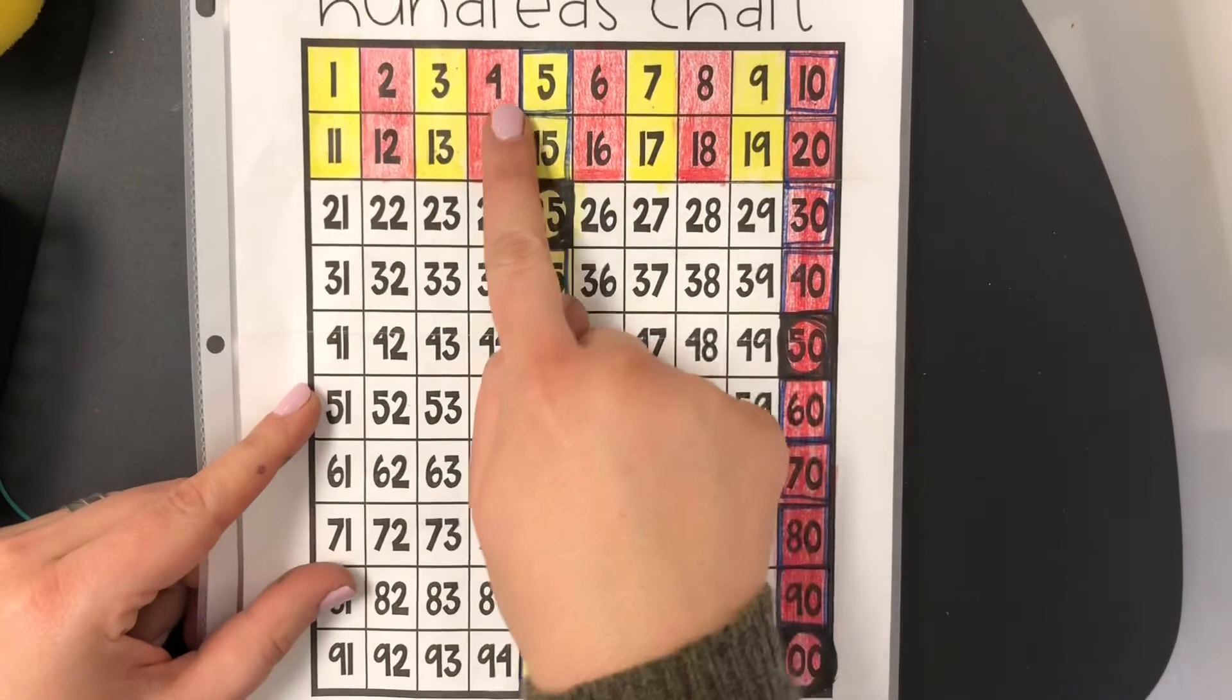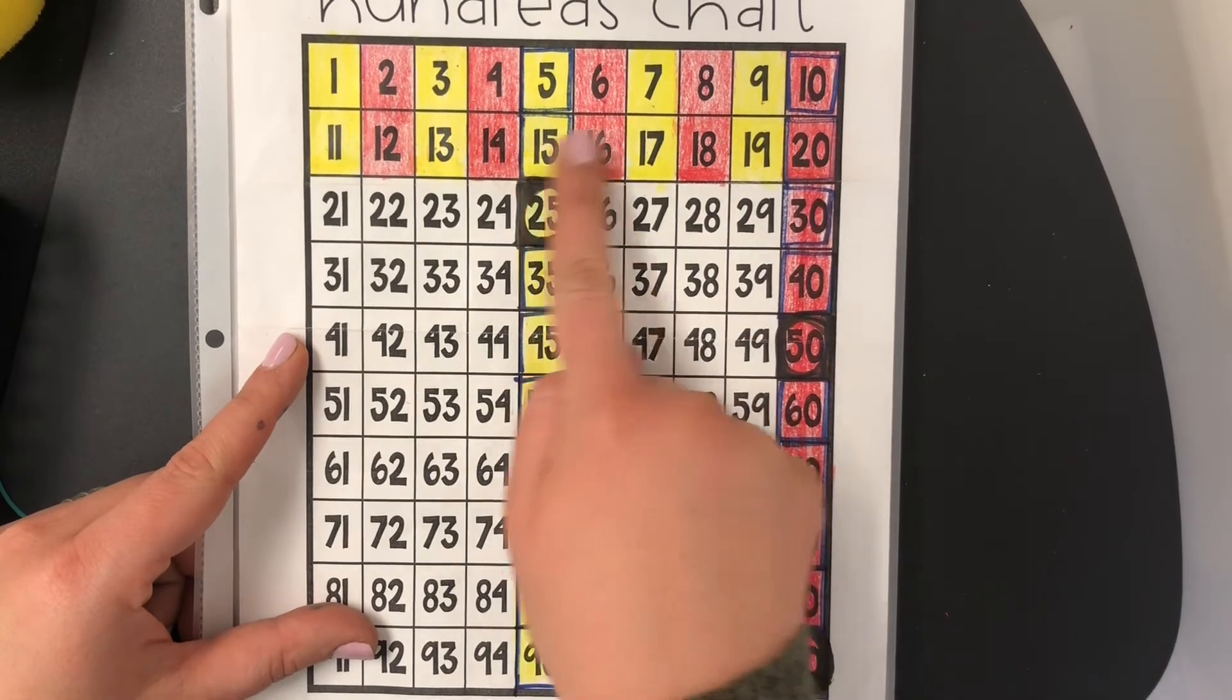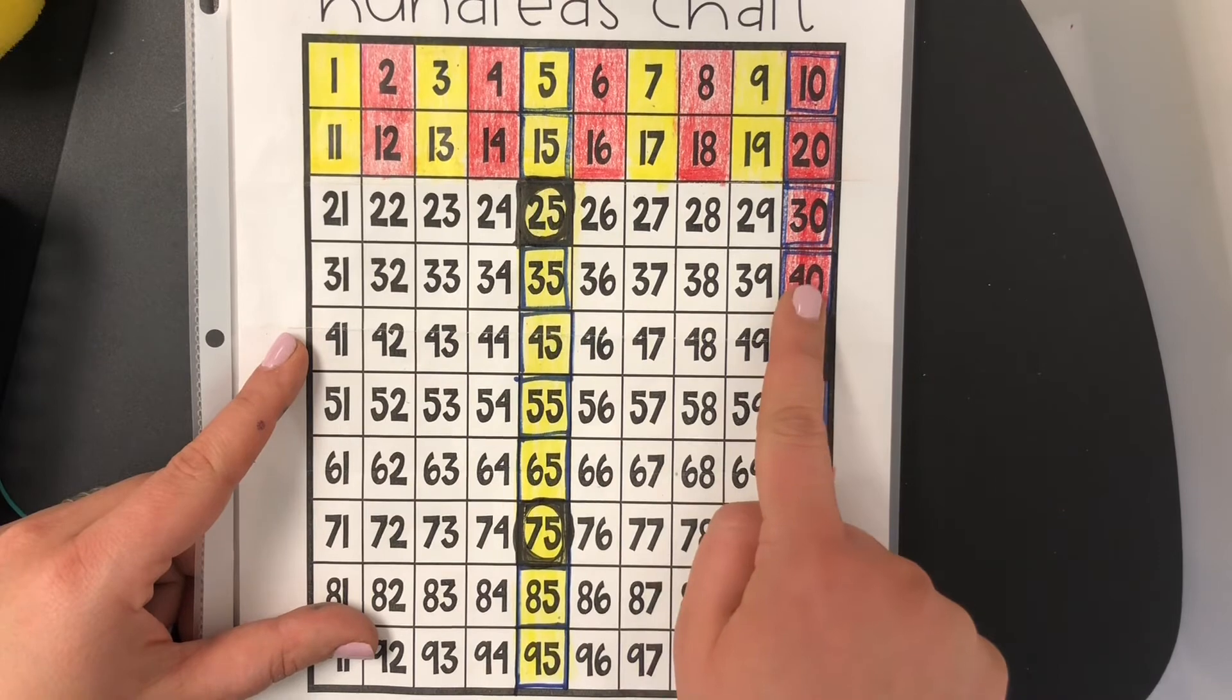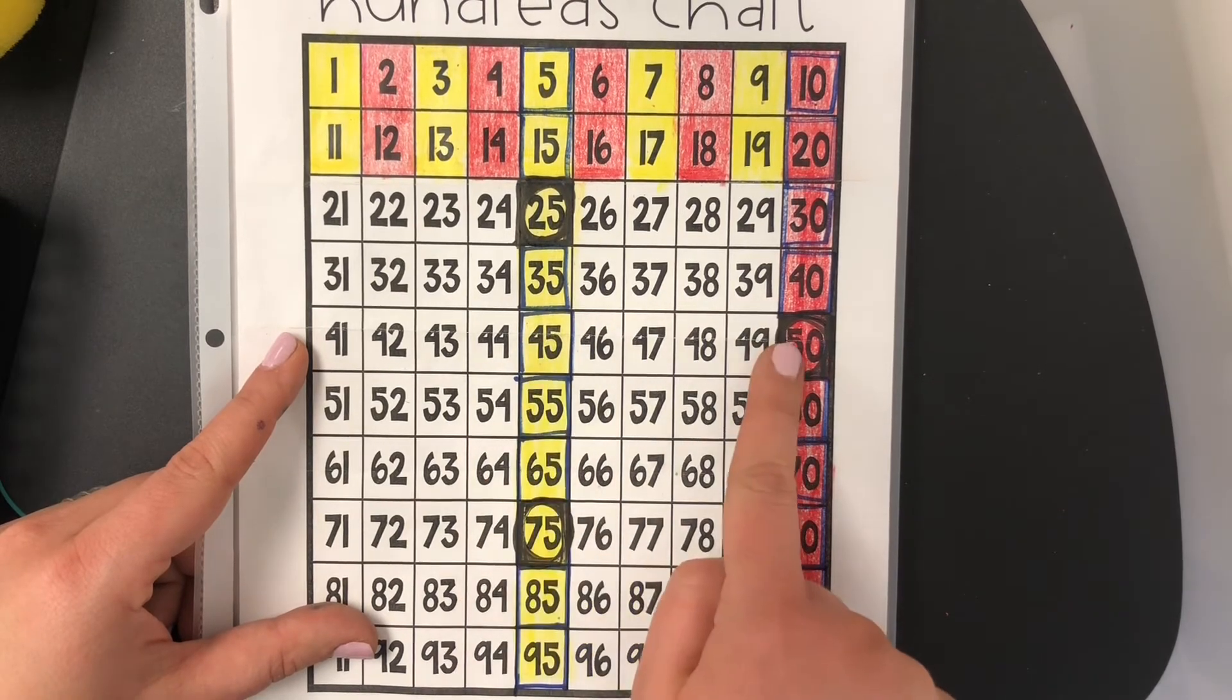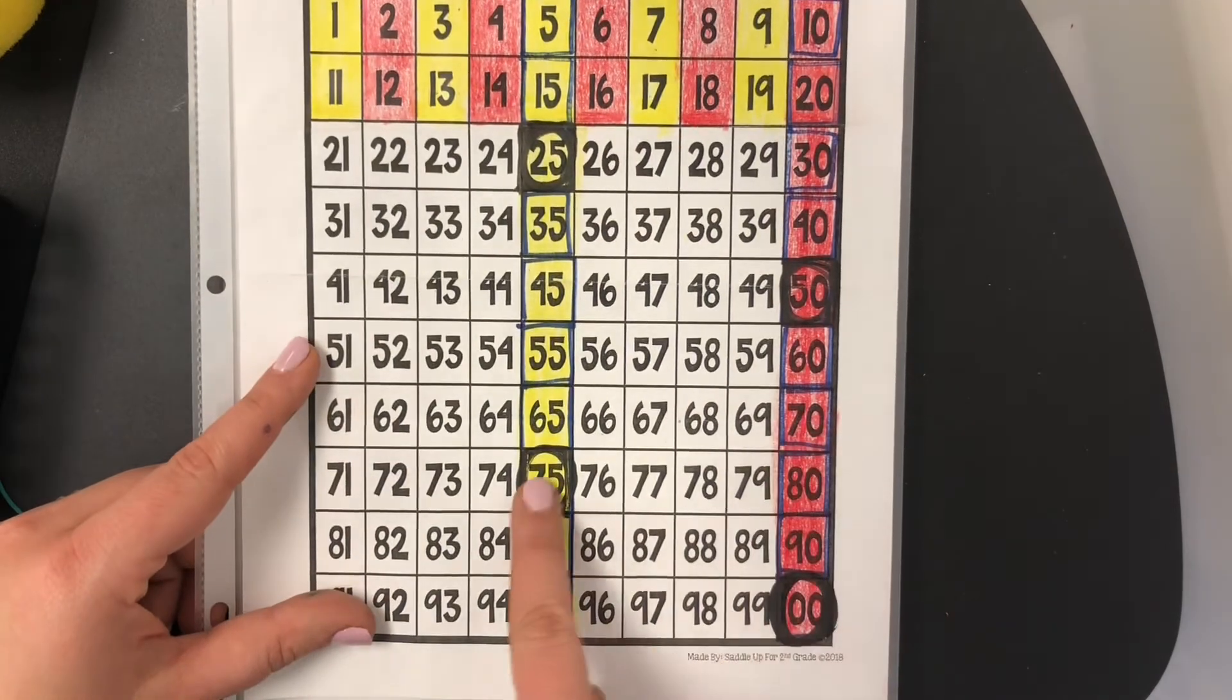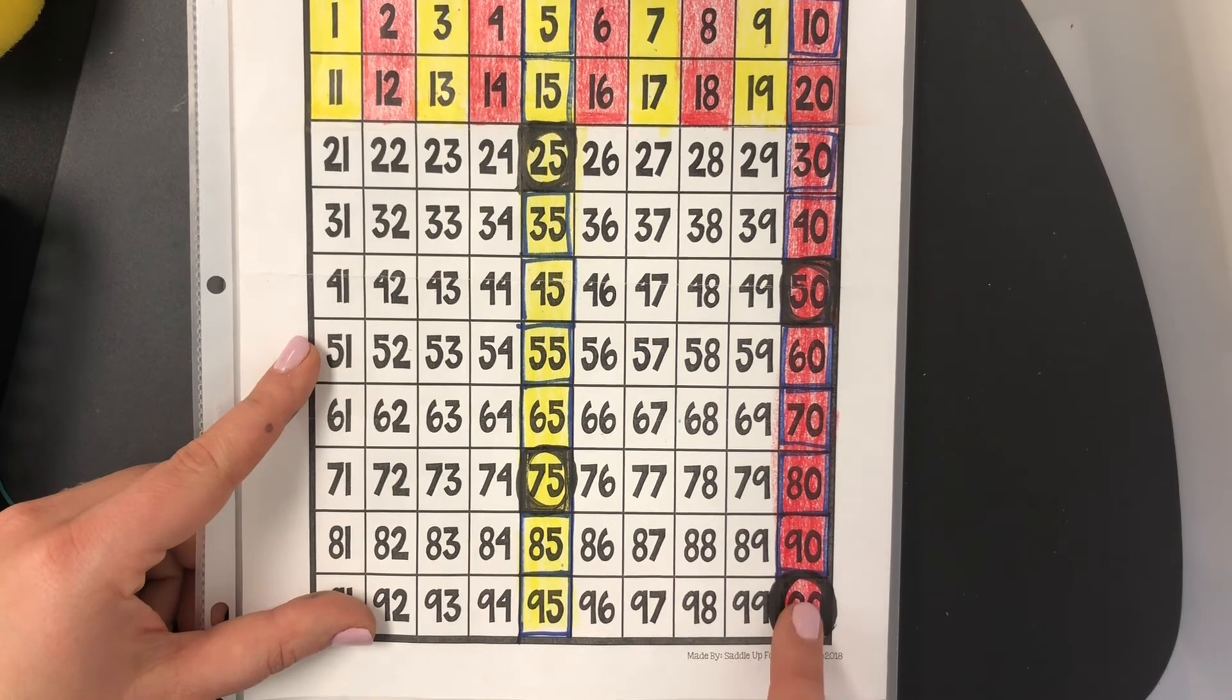If we're counting by fives we're starting in the middle and going to the end. 5, 10, 15, 20, 25, 30, 35, 40, 45, 50, 55, 60, 65, 70, 75, 80, 85, 90, 95, 100.